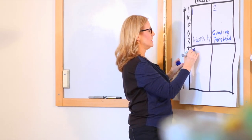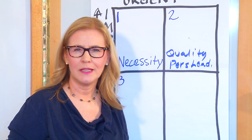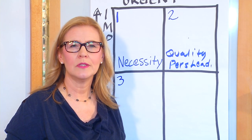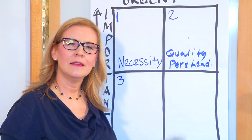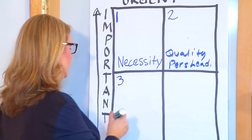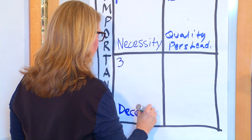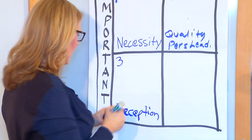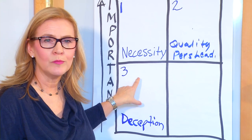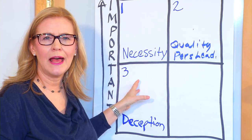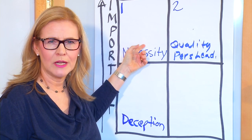Quadrant number three, when you get interrupted. Emails, there can be phone calls. This is the quadrant of deception. It's because you think it's more important than it is. It's urgent but it's not as important as your crisis.